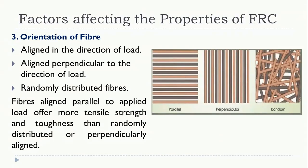The third factor is orientation of the fiber. There are three types: aligned parallel to the load, aligned perpendicular to the direction of the load (90 degrees), and randomly distributed fibers. Fibers aligned parallel to the applied load offer more tensile strength and toughness than randomly distributed or perpendicularly aligned fibers. Parallel alignment gives more resistance to tensile strength and toughness for the overall fiber reinforced concrete.